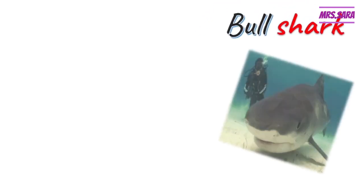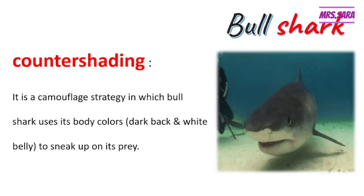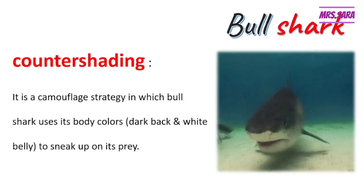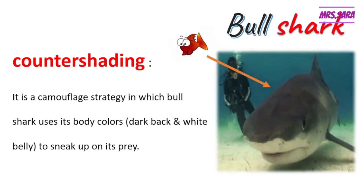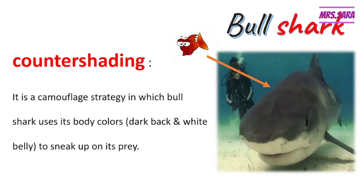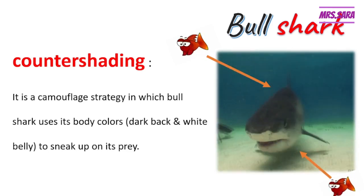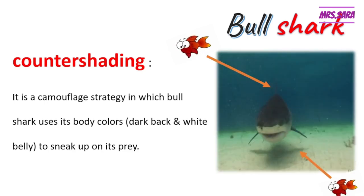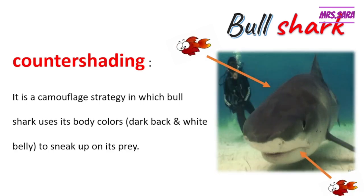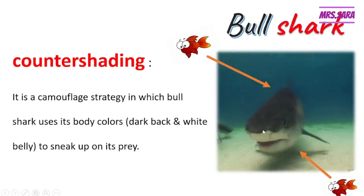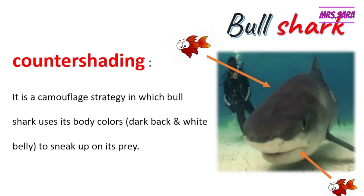Counter shading is a camouflage strategy in which the bull shark uses its body colors — dark back and white belly — to sneak up on its prey. If any prey is above the bull shark, it may not see the shark very well due to its dark back blending into the shadow below. If any prey is swimming underneath and looking up, the bull shark's white belly blends in with the bright light of the sun. So the bull shark uses counter shading to sneak up on its prey and catch them easily with its sharp teeth.